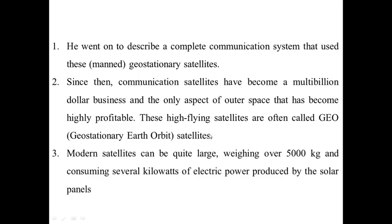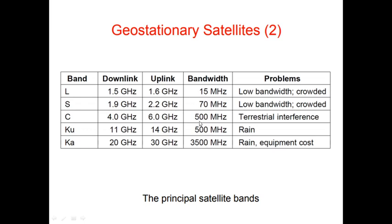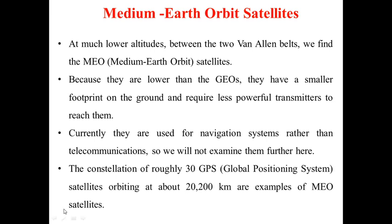Next we move on to medium Earth orbit satellites. These are placed at lower altitudes between the two Van Allen belts. They are lower than geostationary satellites, so they have a smaller footprint and require less powerful transmitters to reach them. Currently they are used for navigation systems rather than telecommunications. Roughly 30 GPS — global positioning system — satellites orbiting at about 20,200 kilometers are examples of MEO satellites.